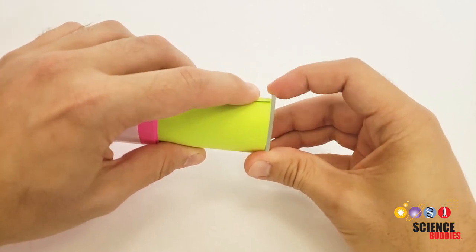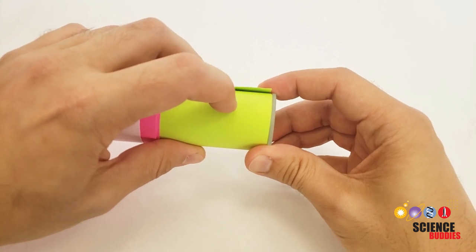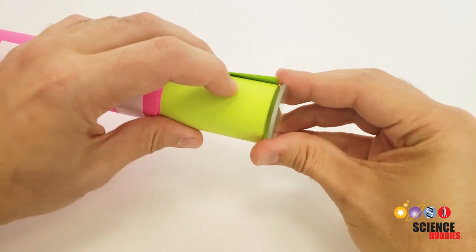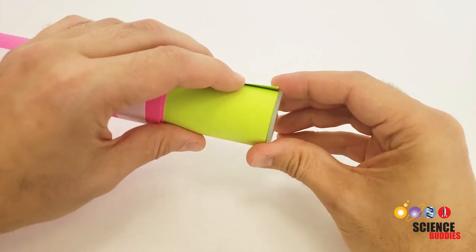Again notice how the outer diameter of the lens is about the same size or slightly bigger than the outer diameter of the tube. You don't want the lens to fit inside the tube because then it will be difficult to tape it in place.